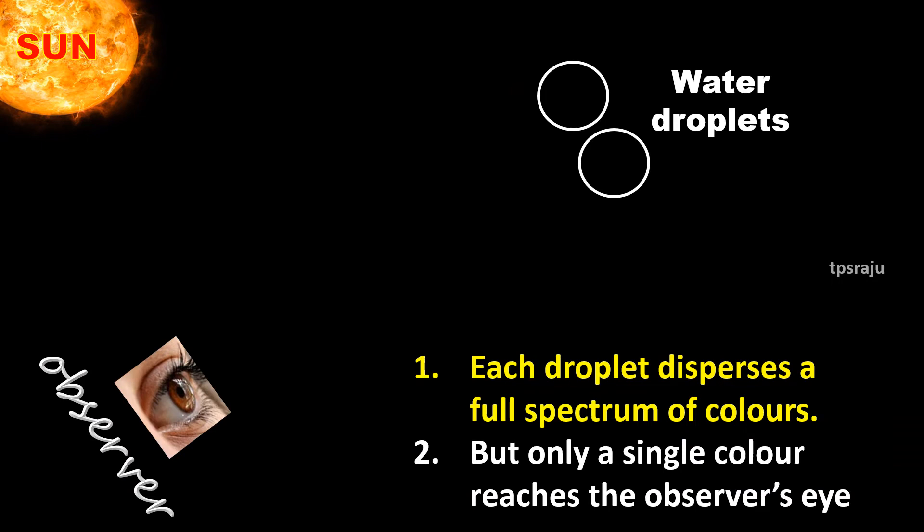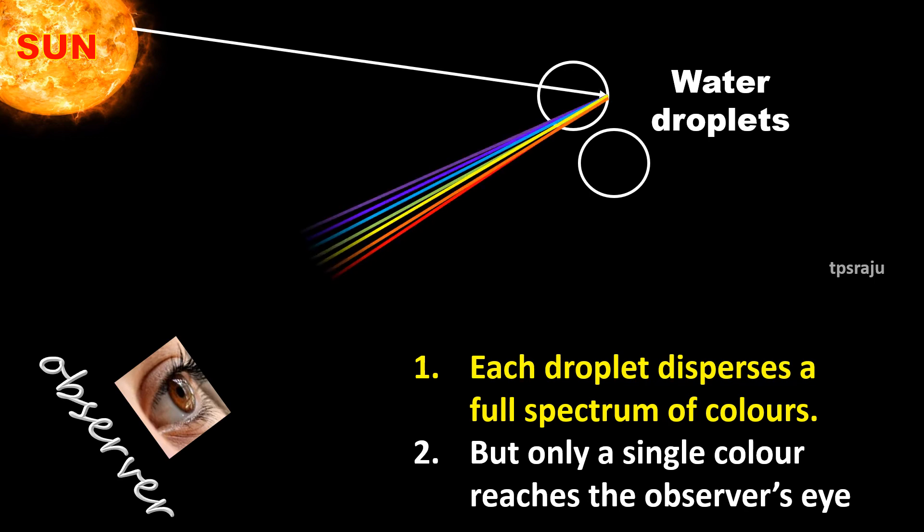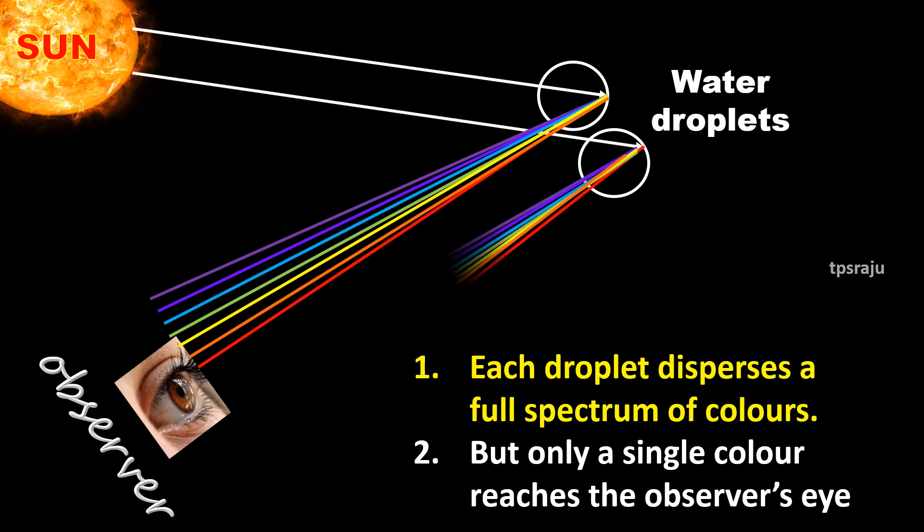Each droplet disperses a full spectrum of colors, but only a single color reaches the observer's eye. If red light from a single droplet reaches the eye of an observer, other colors from the same droplet cannot reach his eye. Likewise, red color reaches the observer from top layer droplets, while violet color from downward droplets. Remaining colors reach from the droplets which are lying between these two layers.